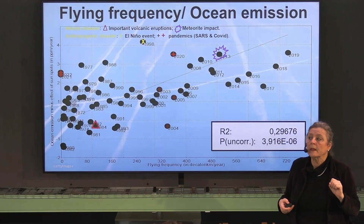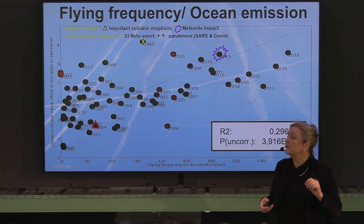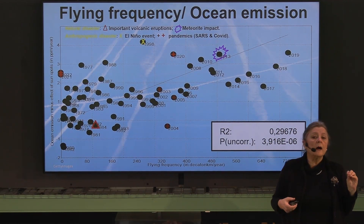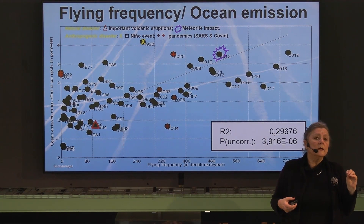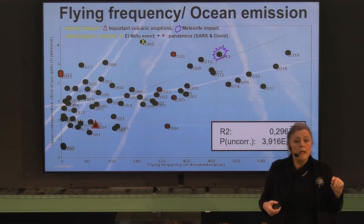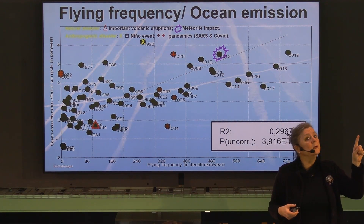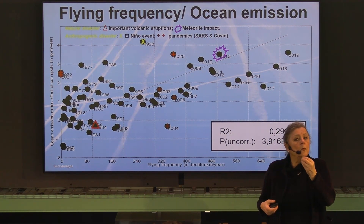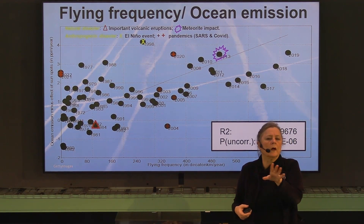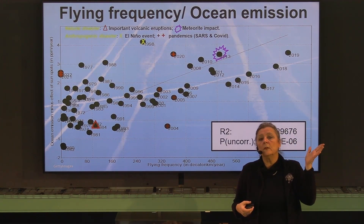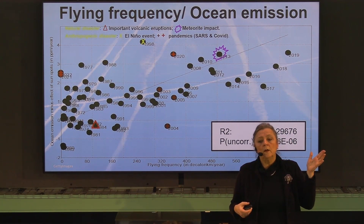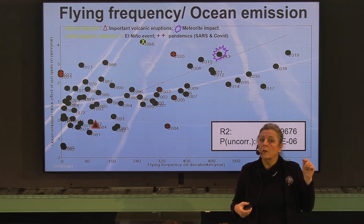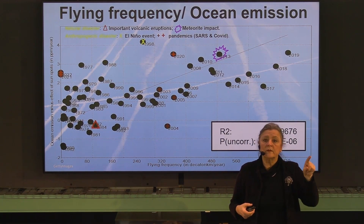Here I plotted our aviation flying hours each year against the yearly CO2 emission of the oceans. The line gives the average relation between the two, and we see it's increasing. We asked the program what is the probability that the two are not related, and the answer was 10 to the minus 6 — negligible. Our flying influences our ocean CO2 emission.